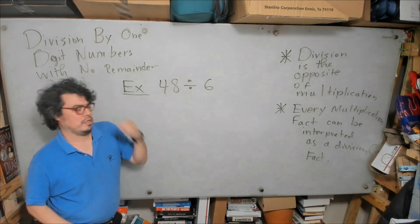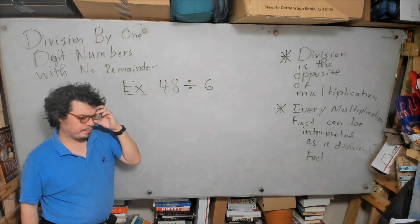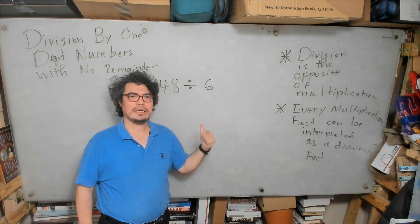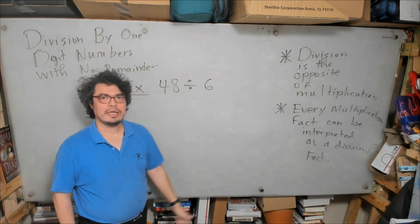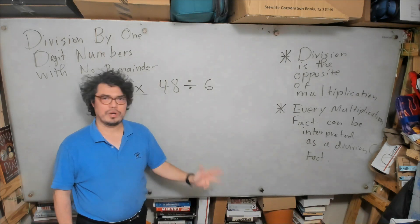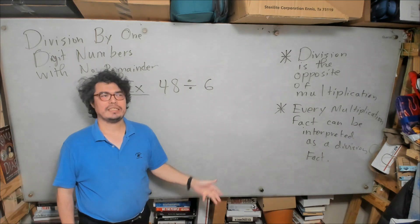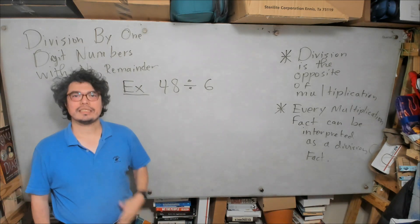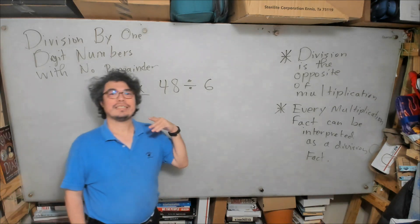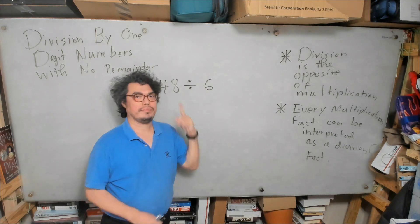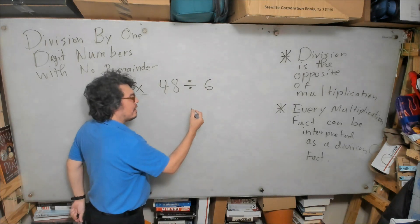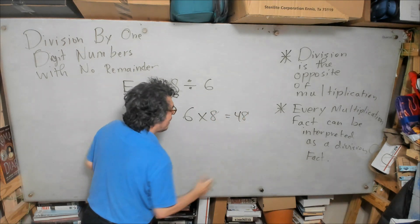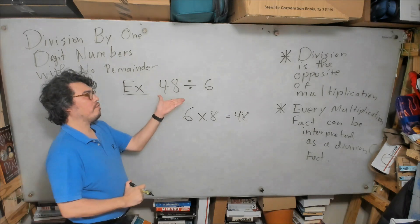Right, so I start going through the multiplication table for 6. 6 times 1 is 6, 6 times 2 is 12, 6 times 3 is 18, 6 times 4 is 24, 6 times 5 is 30, 6 times 6 is 36, 6 times 7 is 42, 6 times 8 is 48. We know that 6 times 8 is equal to 48.